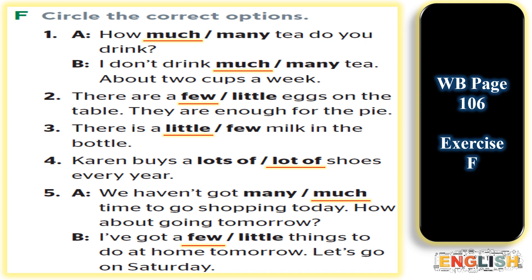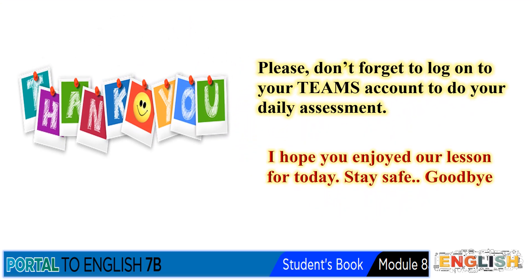In this slide, dear students, we have more quantifiers to remember: 'a lot of' and 'lots of'. 'A lot of' and 'lots of' can be used with both countable and uncountable nouns in informal English. Example 1: There are a lot of people at the party — 'a lot of' is followed by the countable noun 'people'. 2. The man drank lots of coffee — 'lots of' is followed by the uncountable noun 'coffee'. So 'a lot of' and 'lots of' can be used with both countable and uncountable nouns.